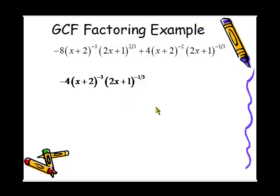we have to figure out what remains from the original problem after we have removed the GCF. We have to take each grouping of items and divide it by the GCF to find what is left. So here we're going to take negative 8 divided by negative 4.